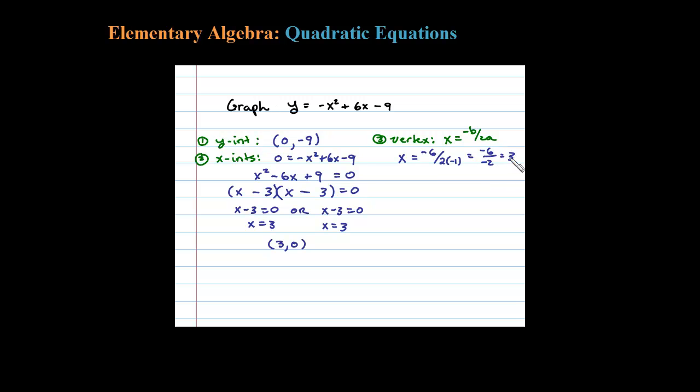Now to find the corresponding y value, take that 3 and plug it in. When you make that substitution, be careful with that leading negative. We're substituting 3 in for x, so the base here is just 3. 3 squared is 9, leave the negative there, so negative 9 plus 18 minus 9, well that's going to add up to be 0. So the vertex is the same as the x-intercept, and that's going to occur here at 3 comma 0.